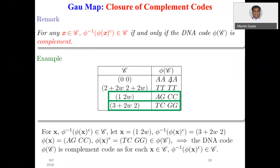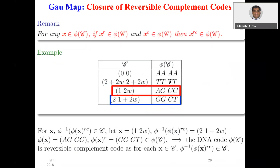Similarly, for closure of complement codes: for any x in C, phi^{-1}(phi(x)^c) is in C if and only if the DNA code phi(C) is a complement code. We verify: taking element (1, 2, omega) in C, applying phi gives AAGCC, taking its complement and then the inverse gives (3 + 2*omega, 2), which is in C — so this code is closed with respect to complement. We also have a condition for reversible complement codes: if x^r and x^c both belong to phi(C), then x^{rc} also belongs to phi(C), so showing reversible and complement is sufficient.